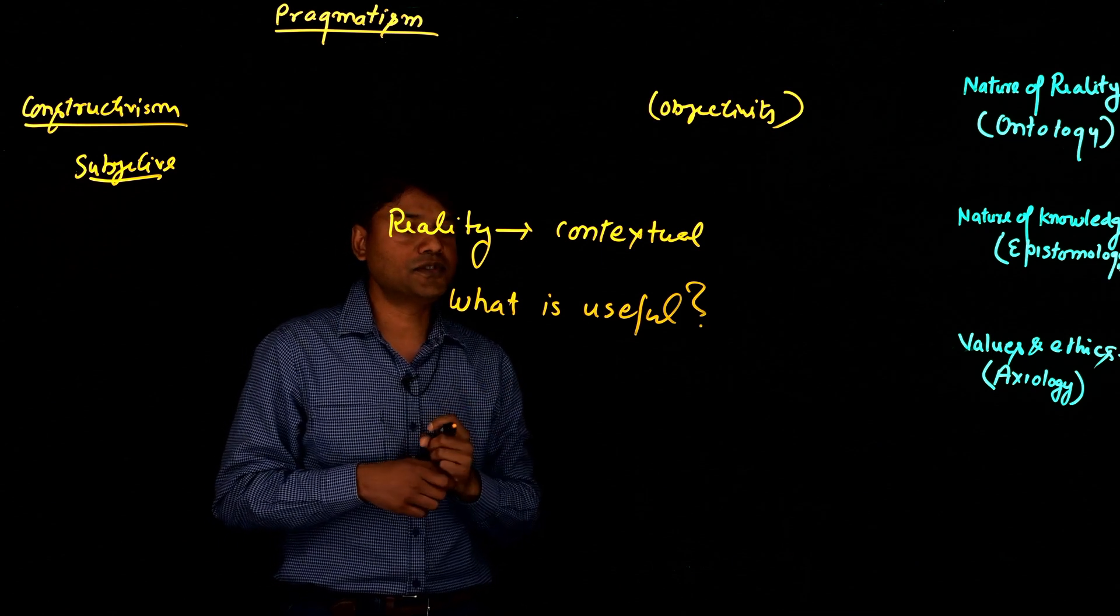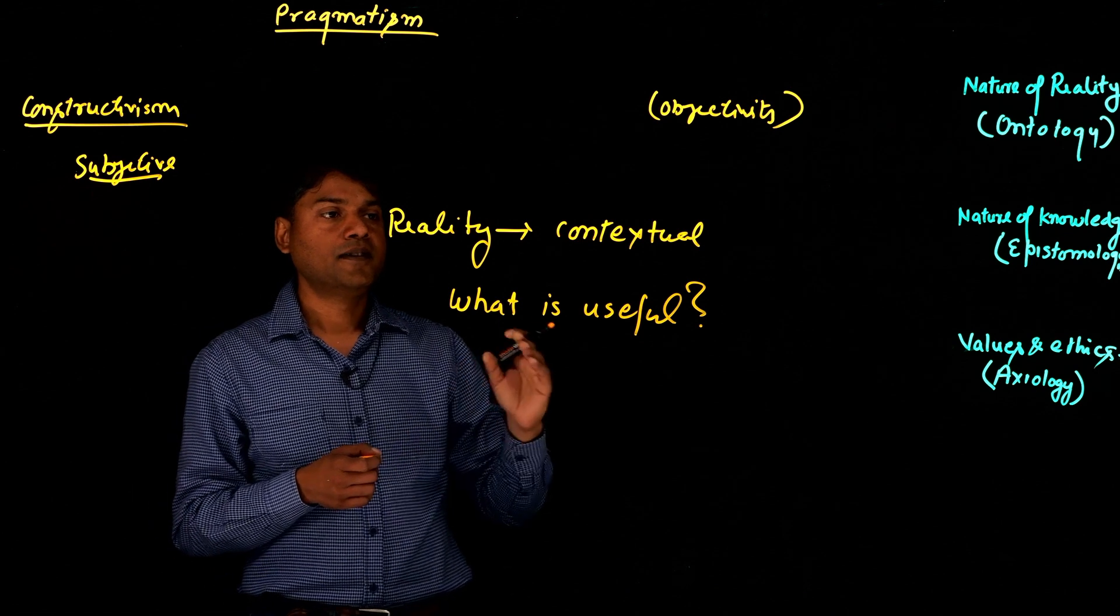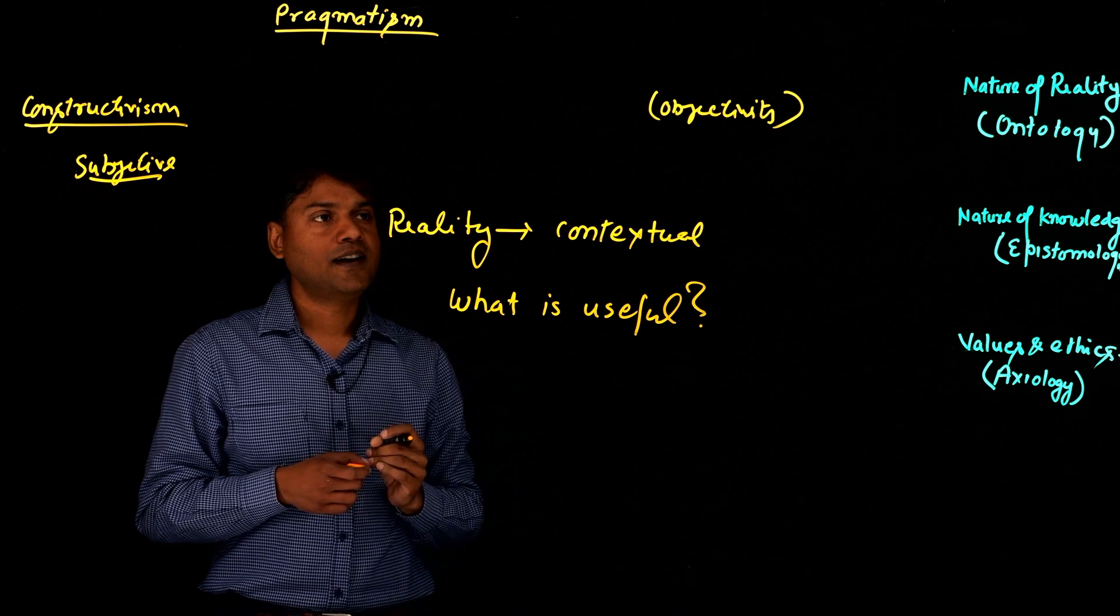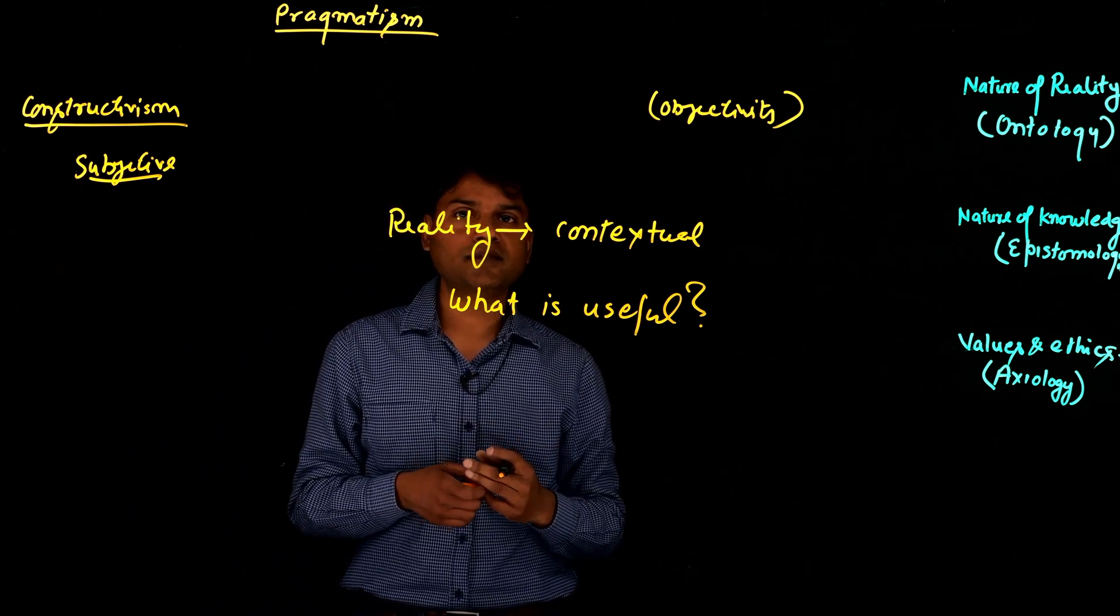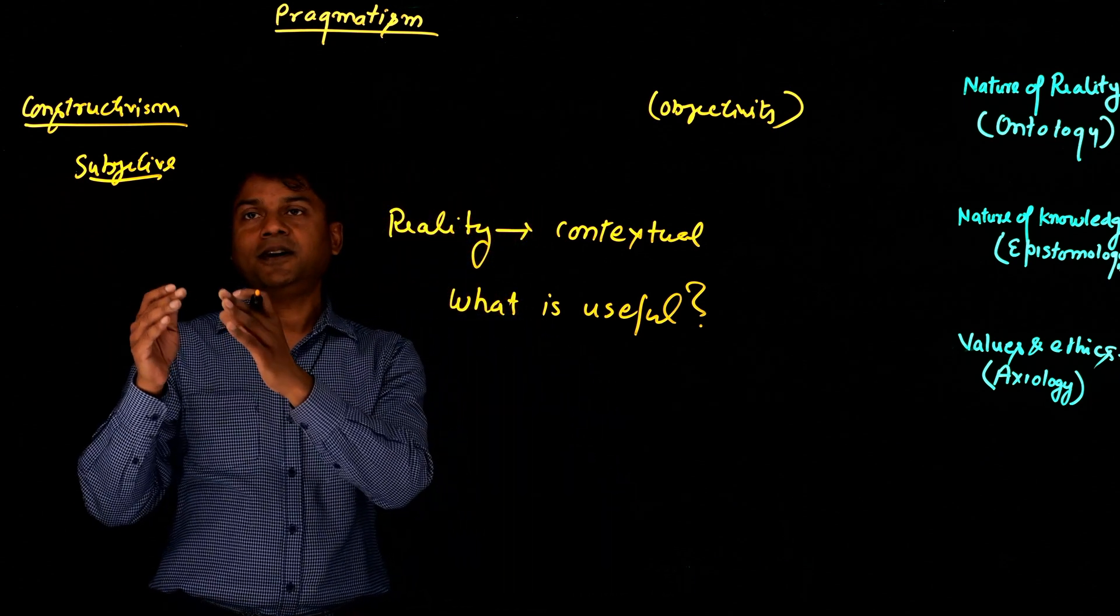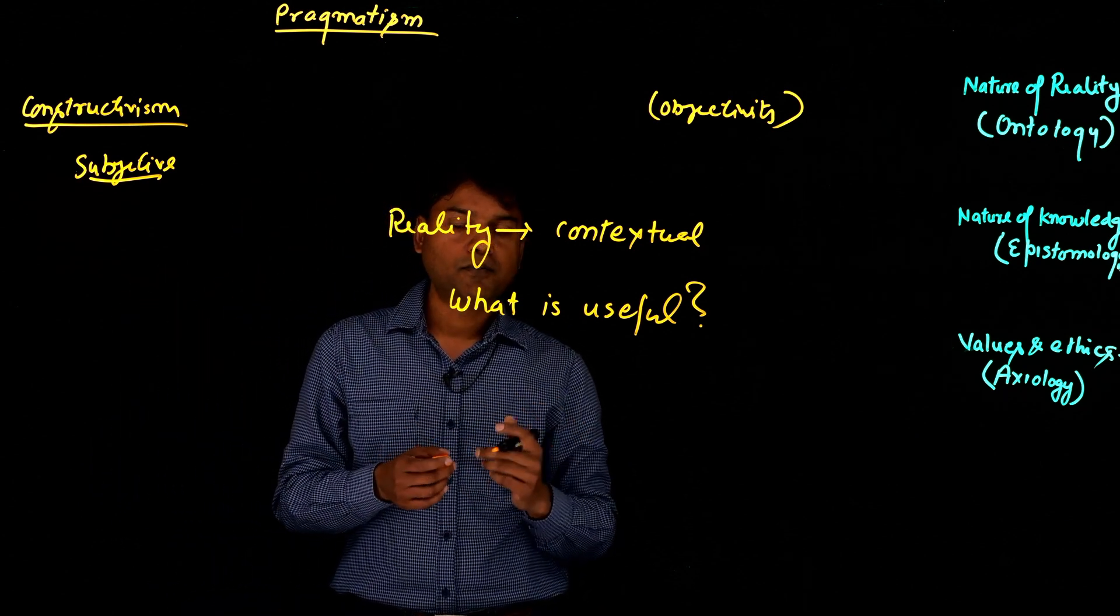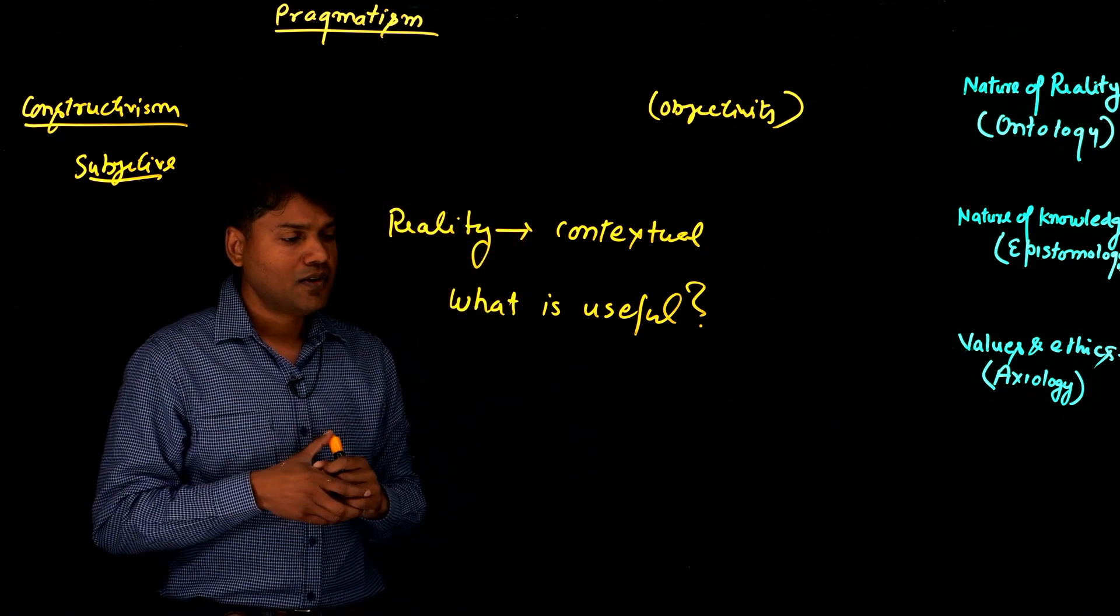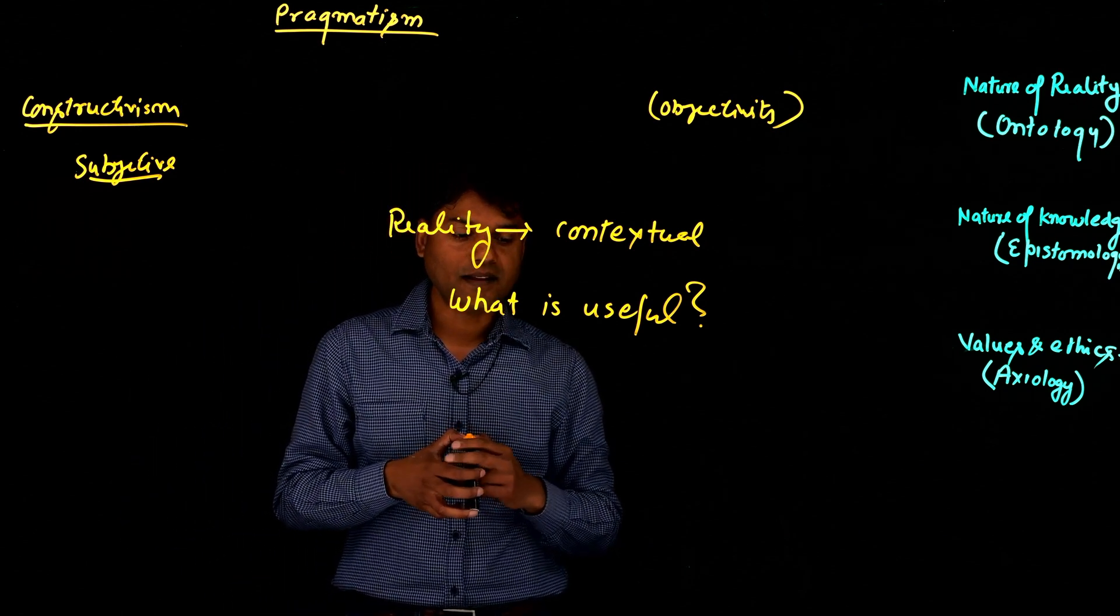Pragmatists are more focused on solving real-world problems. So they're like, if some approach from positivist helps us problem solve real-world problems, it's useful for us, we will take it. If subjectivity, the idea of constructivism, if that helps us problem solve a real-world problem, we will take that. So we are not concerned about what is reality, we are more concerned about problem solving.